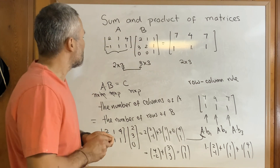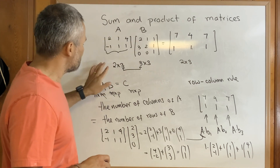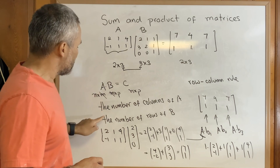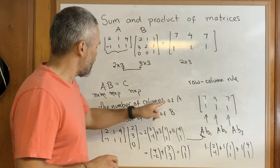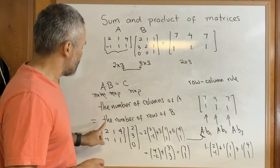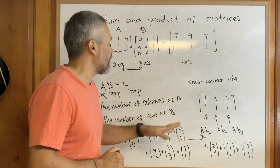Remember, for this product to make sense, we need the number of columns of A to be equal to the number of rows of B.